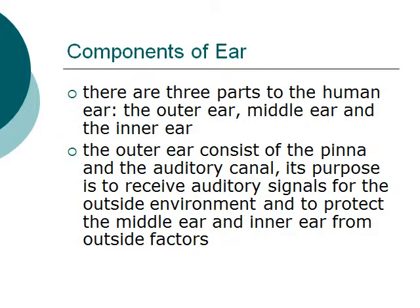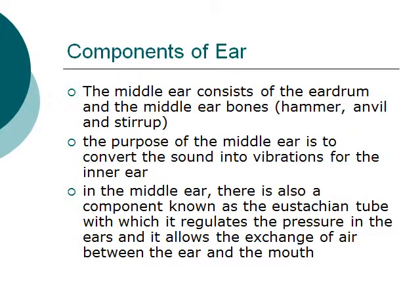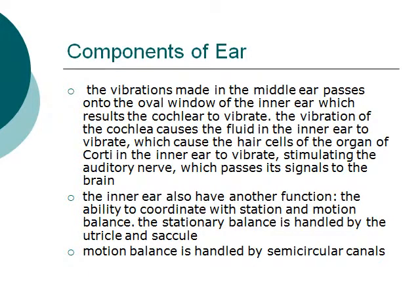The middle ear consists of the eardrum and the middle ear bones — the hammer, anvil, and stirrup. The purpose of the middle ear is to convert sound into vibrations for the inner ear. In the middle ear there is also a component known as the Eustachian tube, which regulates the pressure in the ears and allows the exchange of air between the ear and the mouth.